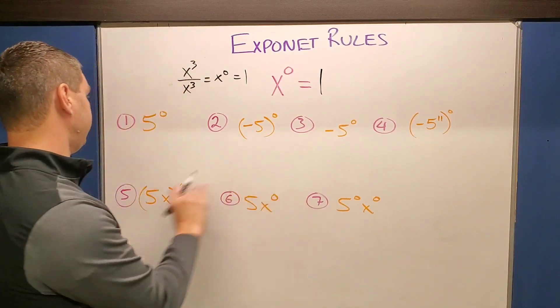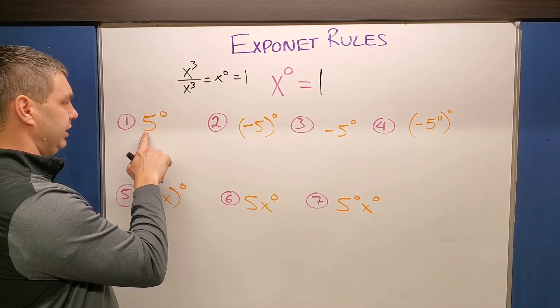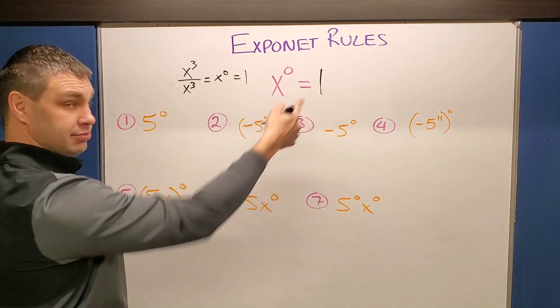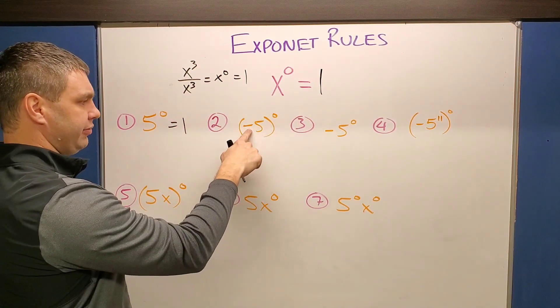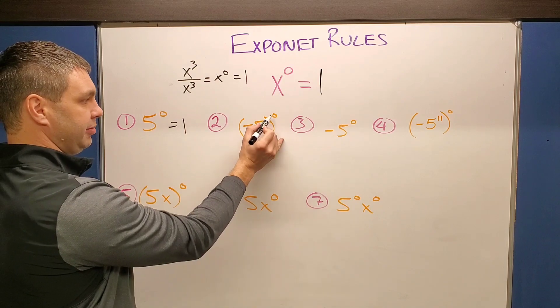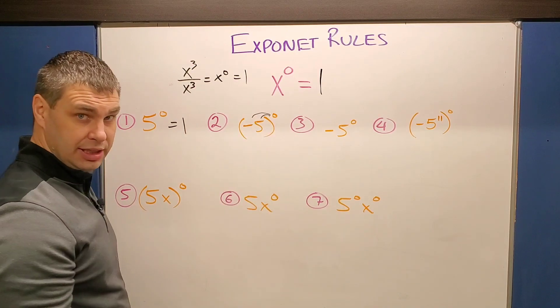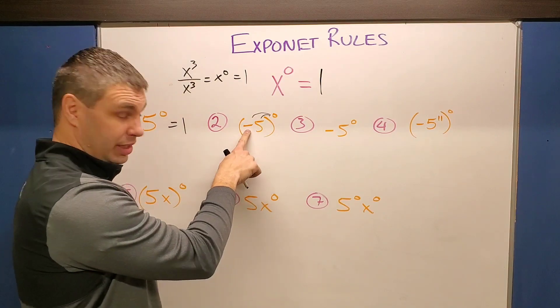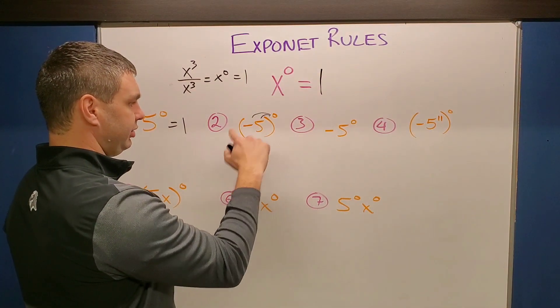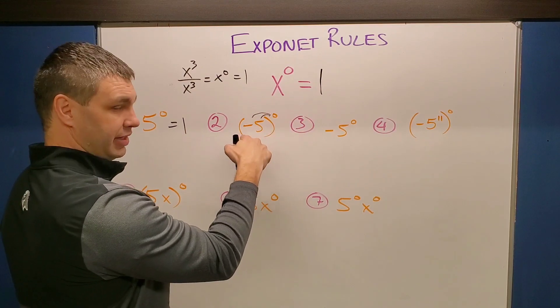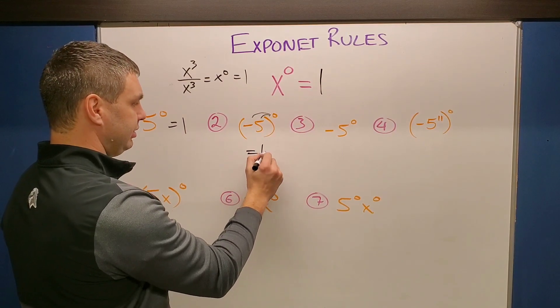So some examples with this, I have seven of them written out here for you. The first one, if I have something raised to zero power, it's going to be one. What if we put a negative with it? Now this zero is being applied to both the negative and the five. If you think of this as kind of like a negative one being multiplied by five. So because of that, this is going to also be equal to one, the zero is affecting everything on the inside.